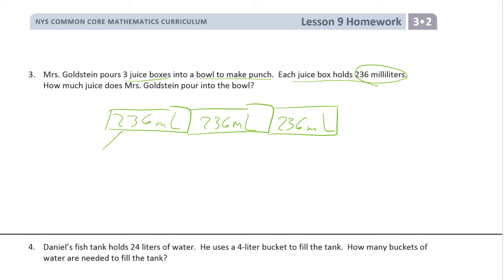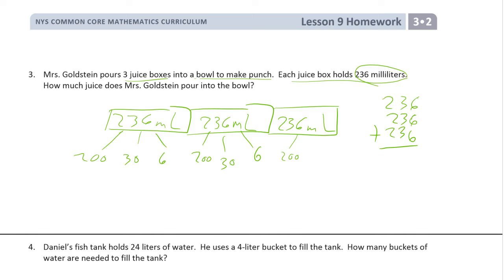If you're going to add all these up, I recommend the vertical strategy — it makes things a lot easier. Otherwise you can do the number bond approach, which is really the same thing, just more work. But if that makes more sense to you and you have a hard time with vertical math, you can do it that way. You have three 200s, three 30s, and three 6s.